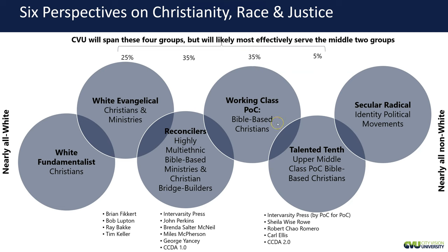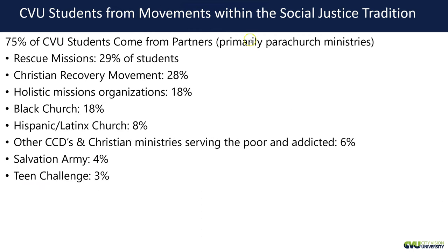75% of our students come from partner organizations. I frame this as the social justice tradition versus the charity tradition. 29% come from rescue missions, 28% from what I call the Christian recovery movement, 18% from holistic missions organizations, 18% from Black church, 8% from Latinx church. Organizations like the Salvation Army and Teen Challenge are all going to have different approaches to cross-cultural issues. All these things need to be taken into account as you're designing courses. We have an incredibly diverse audience at City Vision.